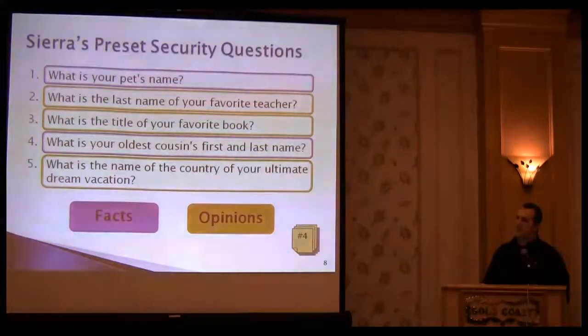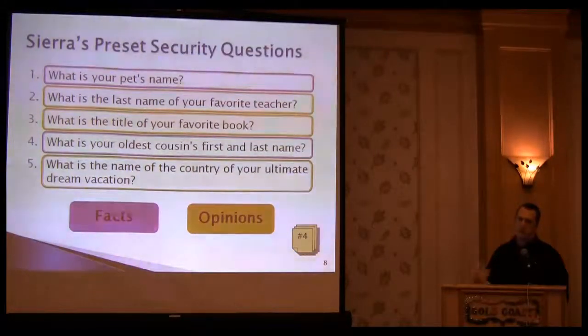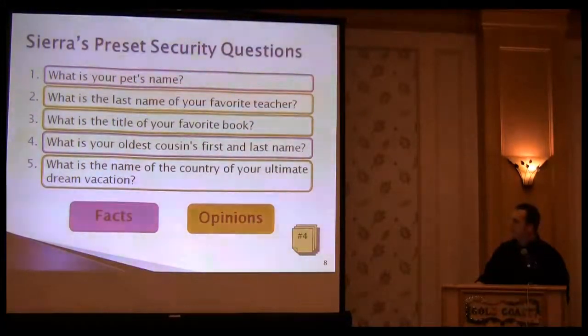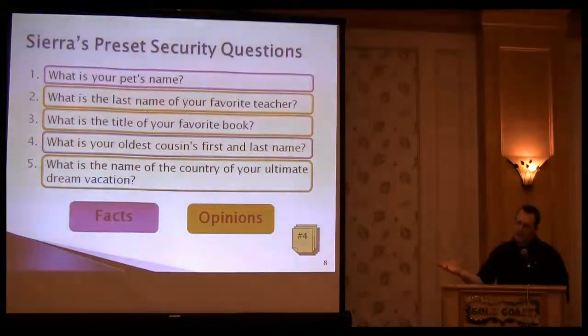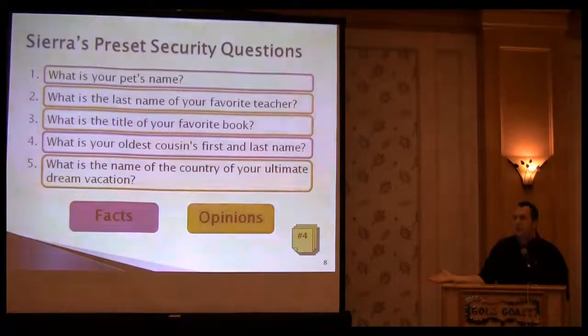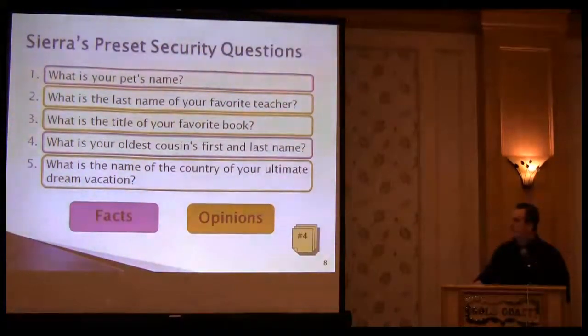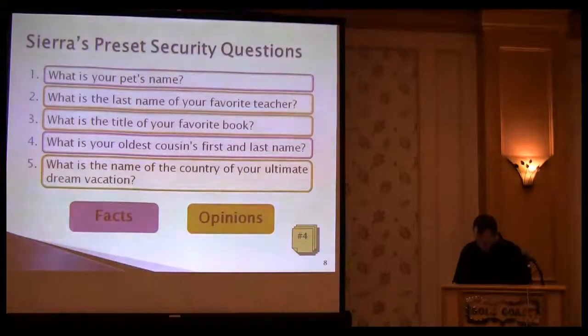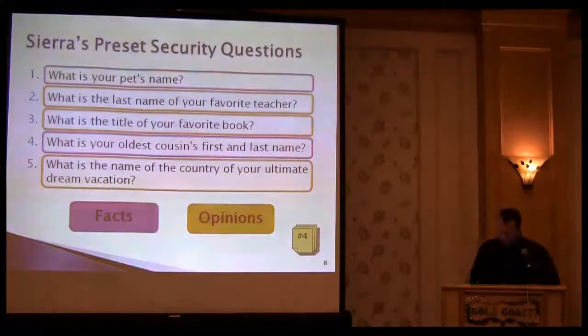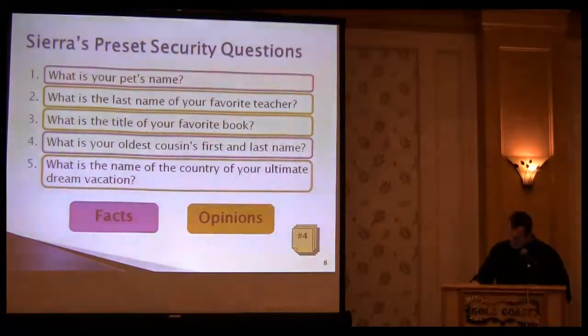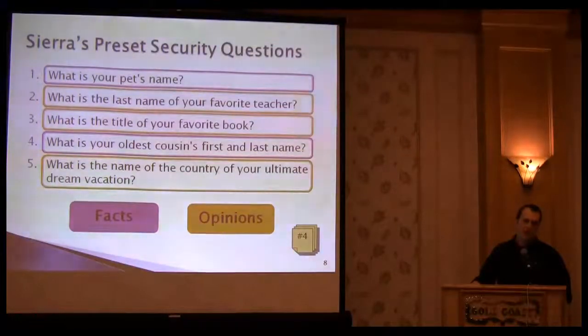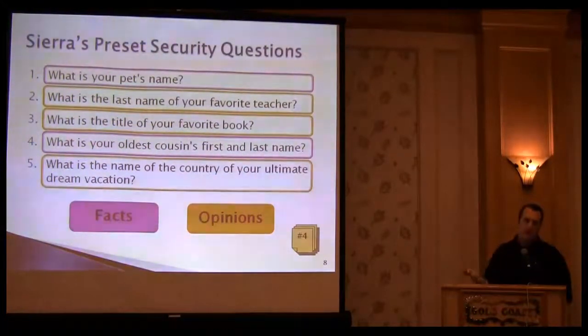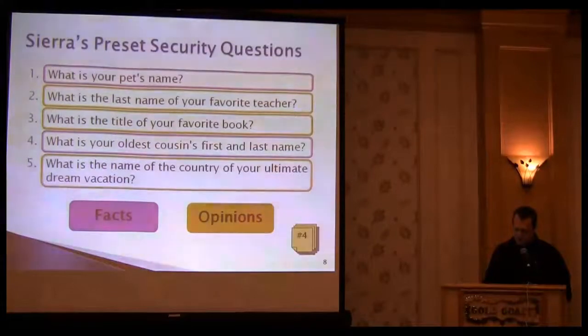Preferences were seen as something that wouldn't change as much, but that's not really the case. Facts tend to be more static. In some cases answers change—how old is your oldest child will change each year. My reference here indicates facts were about 10% more likely to be guessed by a trusted acquaintance than opinion-based questions. So keep in mind these question numbers.